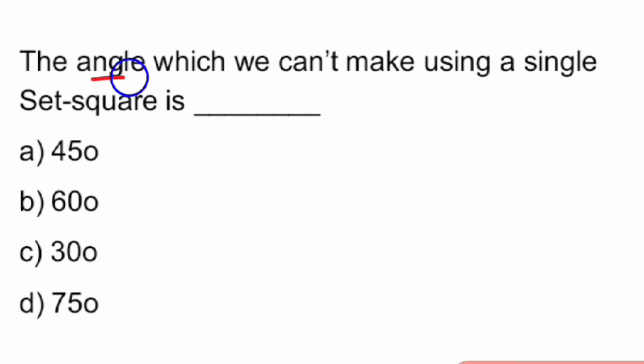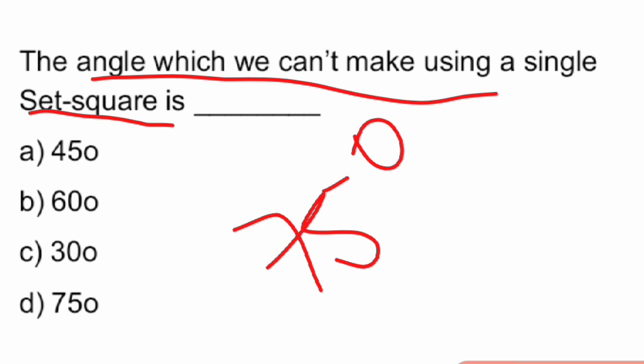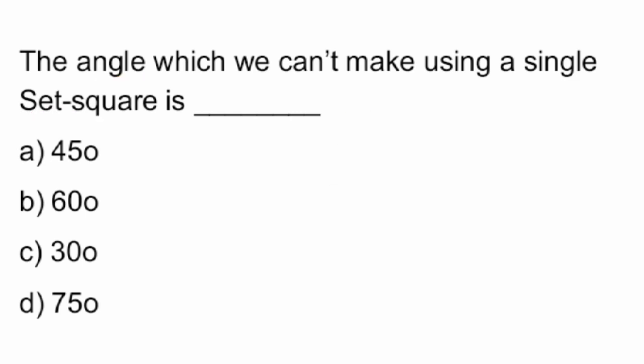First question: which angle cannot be made using a single set square? The angle which we cannot make using a single set square is 75 degrees. Option D is 75 degrees.